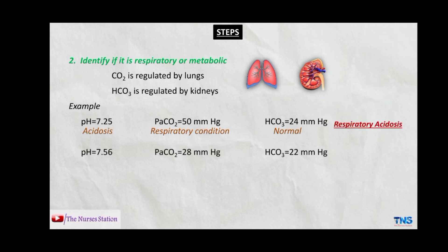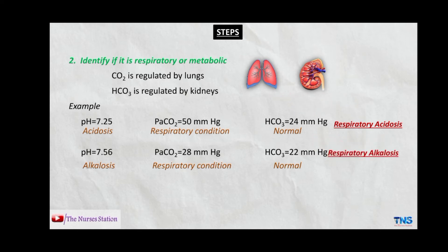Next example: pH 7.56, CO2 28, and HCO3 22. The pH is more than normal so the patient is having alkalosis. The CO2 is less than the normal range, meaning the patient is having a respiratory condition. HCO3 is within normal range, so we conclude the patient is having respiratory alkalosis.